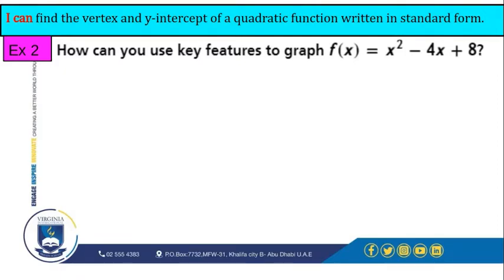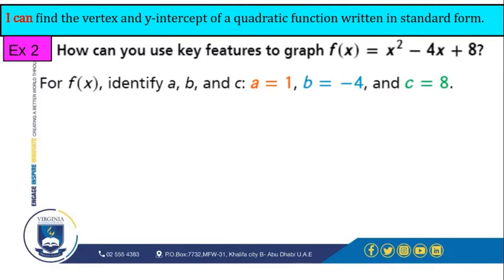At first, we need to find the coefficient values of a, b, and c. a is equal to 1, b is negative 4, and c is 8.